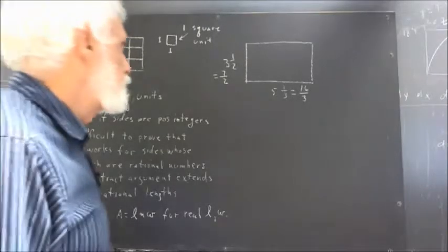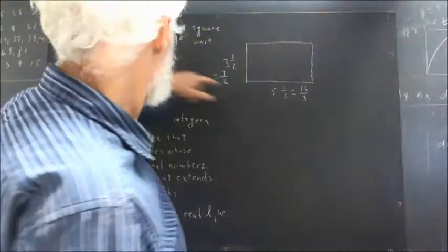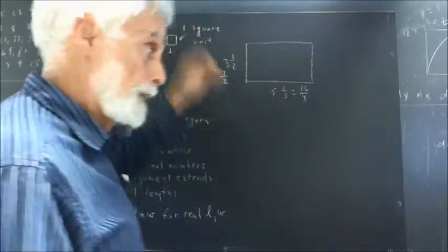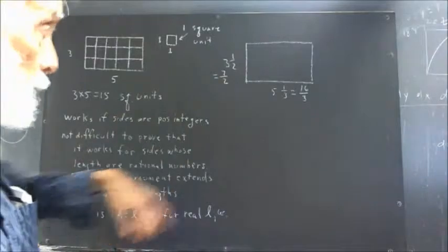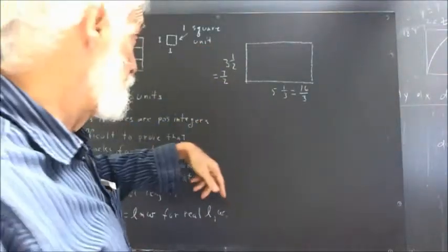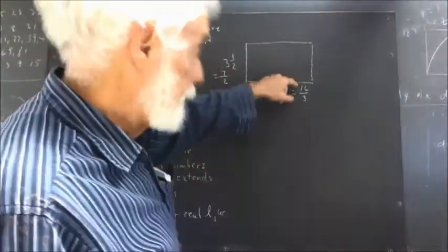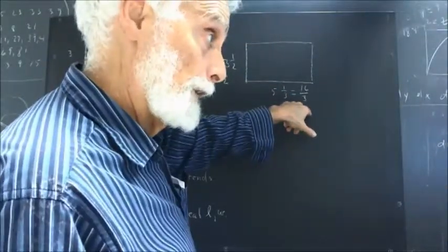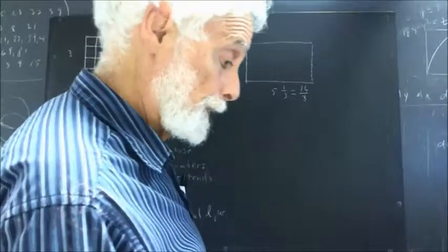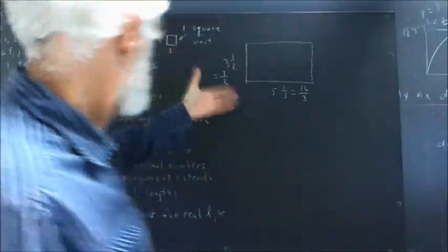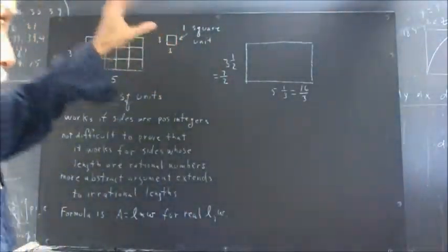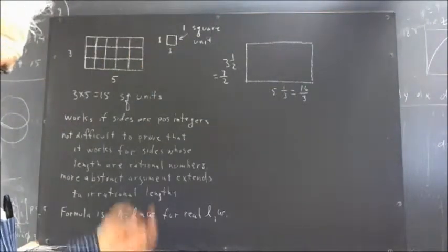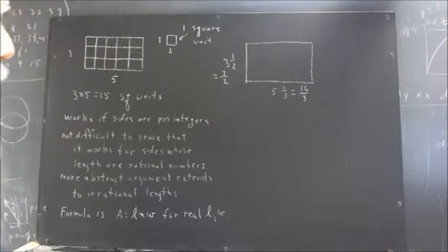So what would we do if the rectangle was instead of 3 by 5, it was 3½ by 5⅓? Now, we want to say that, well, we just multiply 3½ by 5⅓. That's 7/2 times 16/3. That's going to be 7 times 16, so 112 divided by 6. 112 divided by 6 is what? It's 18 and ⅓. Okay, 18 and ⅔.